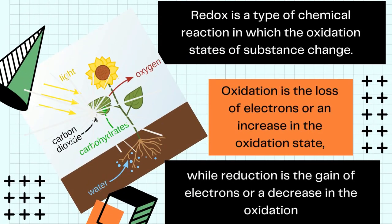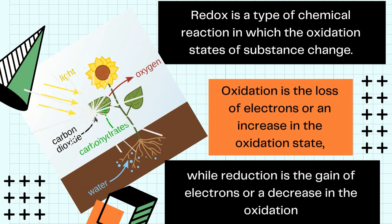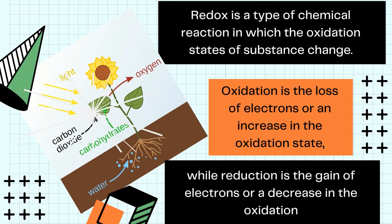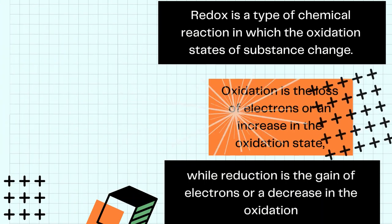Oxidation is the loss of electrons or an increase in the oxidation state. Redox is a type of chemical reaction in which the oxidation states of substances change. While reduction is the gain of electrons or a decrease in the oxidation state.